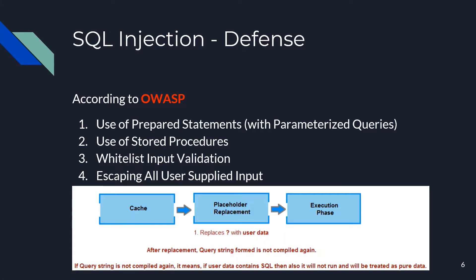So with SQL injection in mind, how can we protect ourselves against it? Some key defenses are outlined in the OWASP prevention cheat sheet, and they include the use of prepared statements with parameterized queries, use of stored procedures, whitelisting input validation, and if that doesn't work, escaping all user-supplied input. For this specific example, we simply use prepared statements — the username and password are passed in and treated strictly as data, not as part of the code, preventing any further SQL queries.